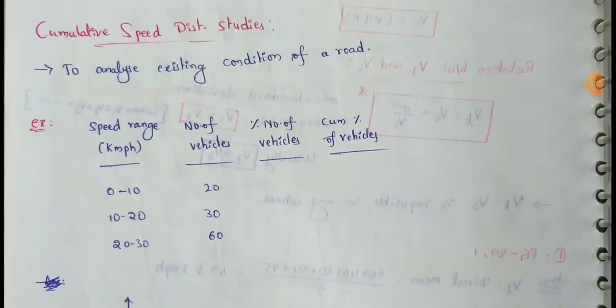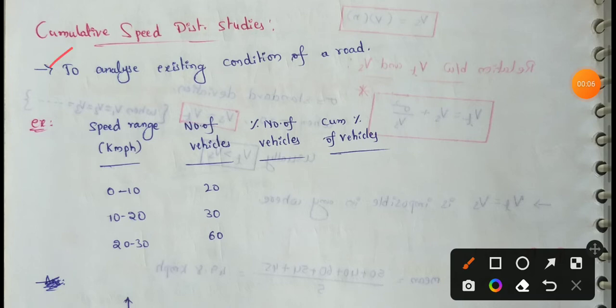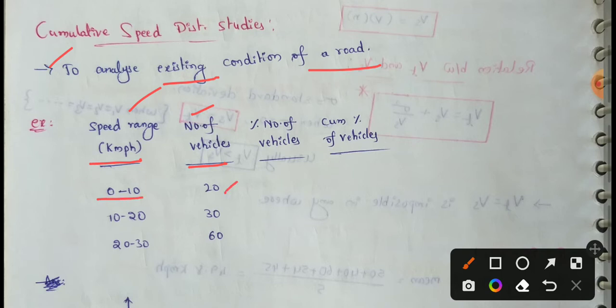The next topic is cumulative speed distribution studies, used to analyze existing off-road conditions. For example, data is provided with speed ranges in km per hour and the number of vehicles in each range.